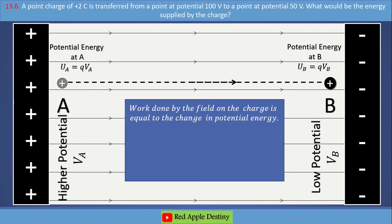The work done by the field on the charge equals the change in potential energy: W equals UA minus UB. Substituting, W equals QVA minus QVB, which gives W equals Q into (VA minus VB).